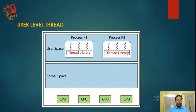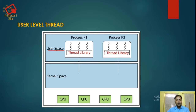You can see the picture of user-level threads. This is the user-space. You can see process P1 and process P2. This is the thread library, which is accessible by all the threads. There is also a thread library for process P2, and all threads using this P2 process will execute this library. This is the kernel-space.